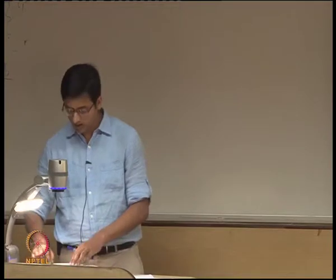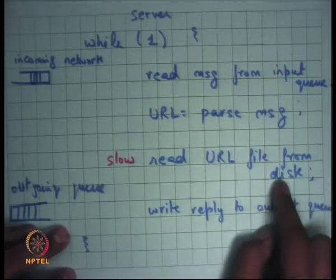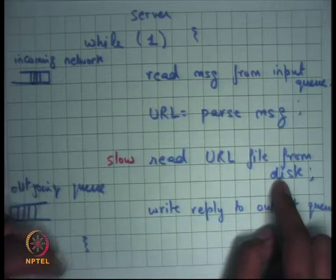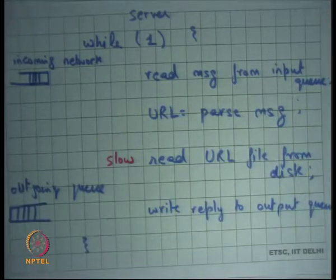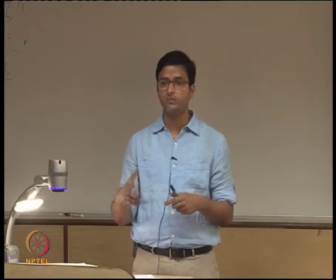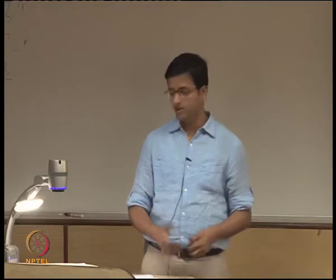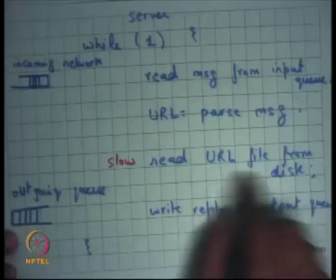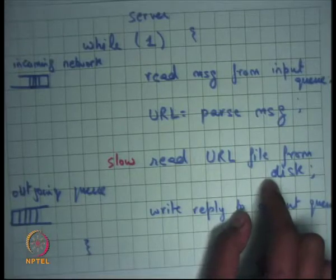The first optimization that comes to mind: why read from disk every time? It's quite likely that the same pages are being requested by multiple clients. We can take advantage of locality — spatial and temporal — and use caching, storing the contents of the disk in main memory.